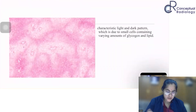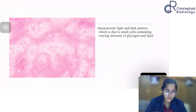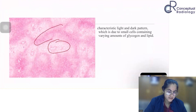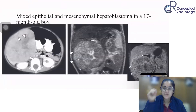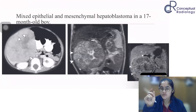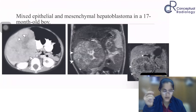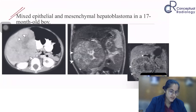On histology, there are light and dark areas due to varying amounts of glycogen and lipid content within the tumor. This is why these lesions may show fat or lipid content, which is lost on out-of-phase MRI imaging, causing the lesion to become hypointense. We now look at a mixed epithelial and mesenchymal type hepatoblastoma in a seven-month-old boy.